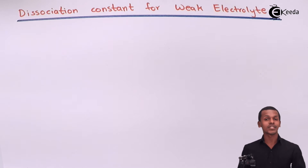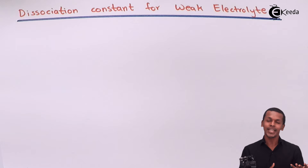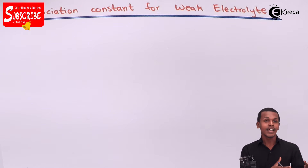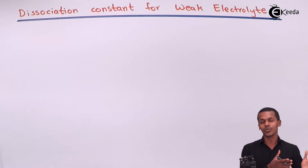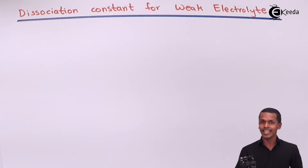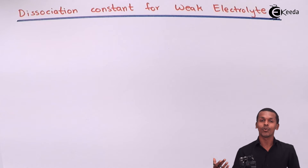We are going to discuss the dissociation constant for a weak electrolyte. Whenever we consider a weak electrolyte, it dissociates but it doesn't dissociate completely. Because of this, we see an equilibrium between the ions obtained from the electrolyte and the original electrolyte itself — that is, between the products (the ions) and the reactant (the electrolyte).